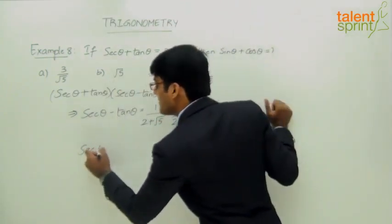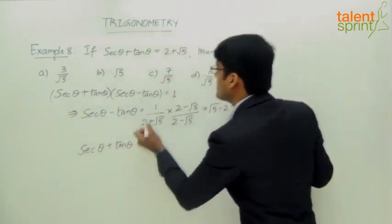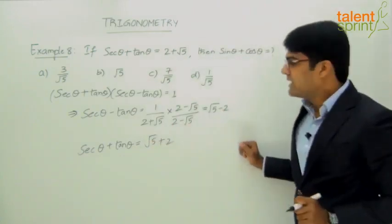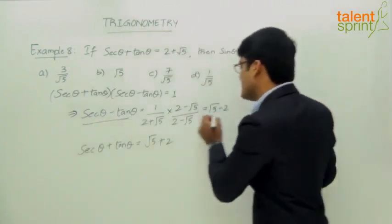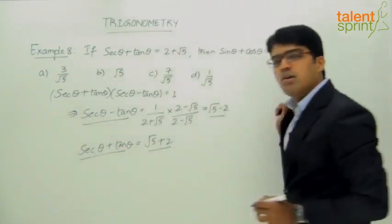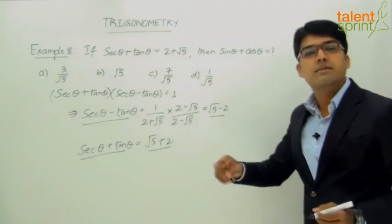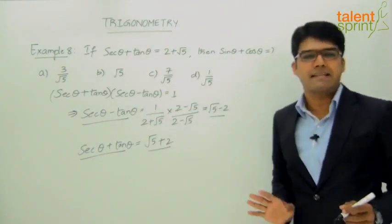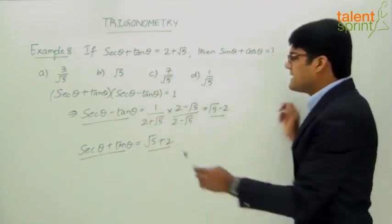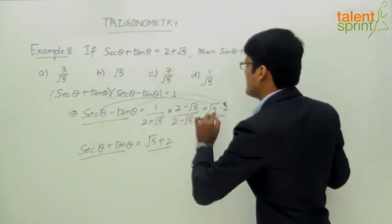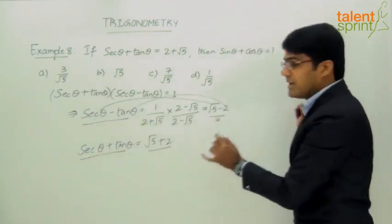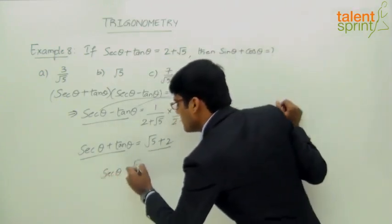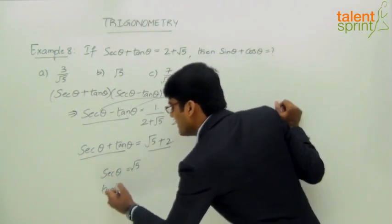We now have two equations: secant theta plus tan theta equals root 5 plus 2, and secant theta minus tan theta equals root 5 minus 2. These are two equations with two unknowns — secant theta and tan theta. By inspection, we can directly conclude that secant theta equals root 5 and tan theta equals 2, since root 5 plus 2 and root 5 minus 2 match perfectly.